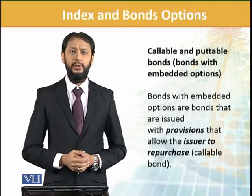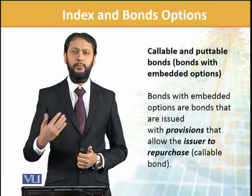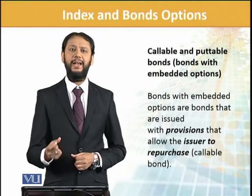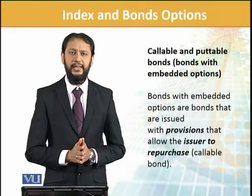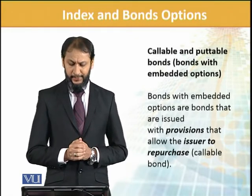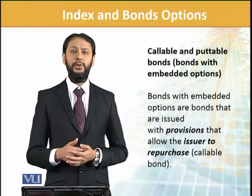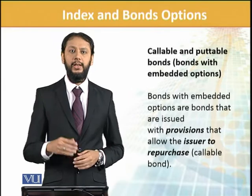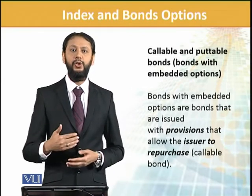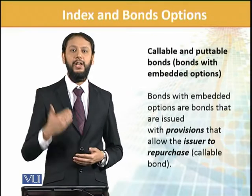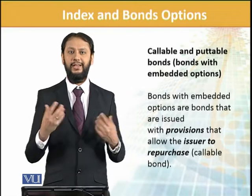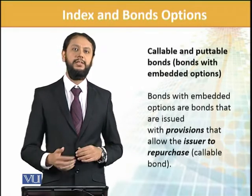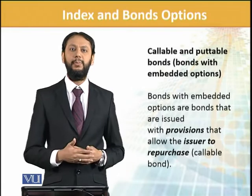There are other types of bonds we need to learn: callable and putable bonds — also called put bonds or putable bonds. These are known as bonds with embedded options, where the option is built into the bond itself. A callable bond has a provision that allows the issuer to repurchase the bond. For example, a company may issue a 20-year bond but include a call provision allowing them to buy it back after 3 or 5 years. This is an advantage for the issuing company.